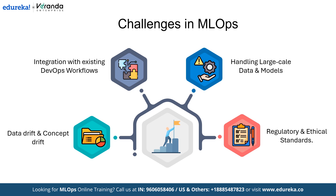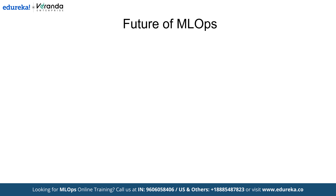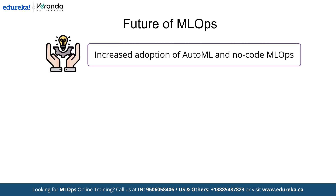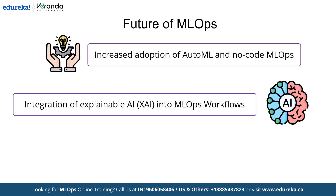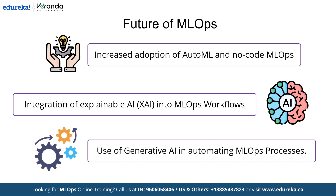Addressing the challenges in MLOps sets the stage for exploring how emerging trends and innovation are shaping its future, driving more efficient, transparent, and scalable machine learning solutions. The future of MLOps is poised for transformative advancements. AutoML and no-code MLOps are making it easier for organizations to adopt and scale machine learning by enabling non-technical users to build and manage models efficiently. The integration of explainable AI into MLOps workflows ensures transparency and accountability, addressing critical concerns around bias and trust in AI systems. Furthermore, the incorporation of Generative AI is automating various MLOps processes such as feature engineering, pipeline automation, and anomaly detection, accelerating workflows and enhancing model performance.